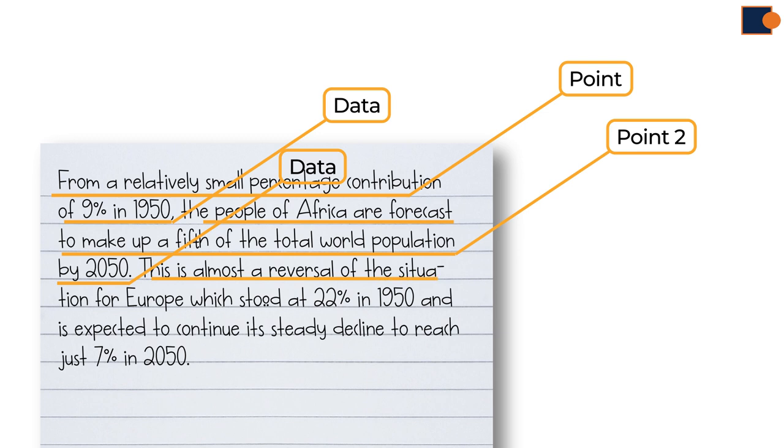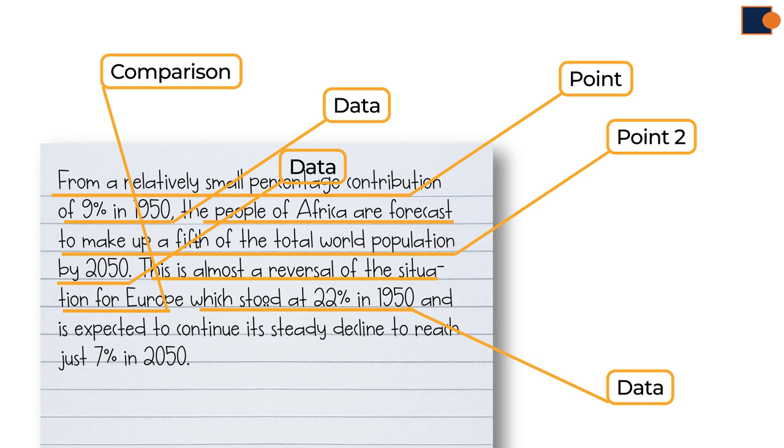By 2050 is support for evidence. This is almost a reversal of the situation for Europe. This is comparison. And again comes supporting data, at 22% in 1950. And is expected to continue. Its steady decline is another point. To reach just 7% in 2050 is supporting data.